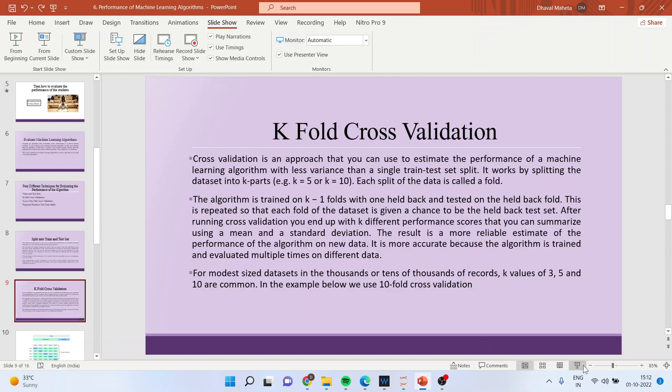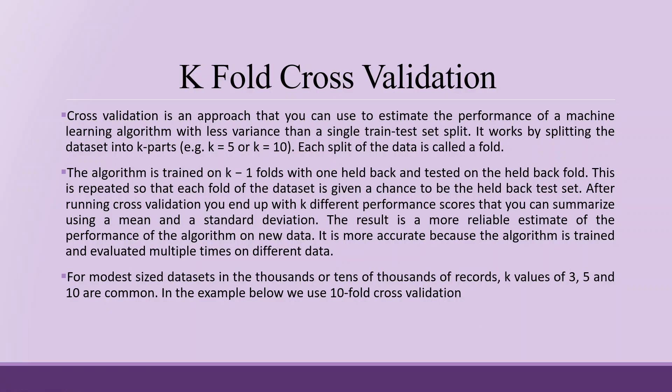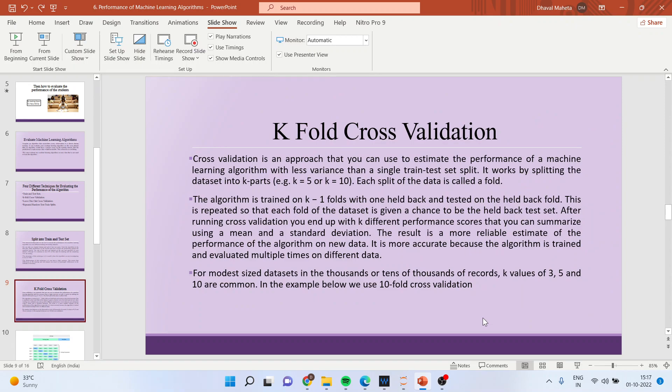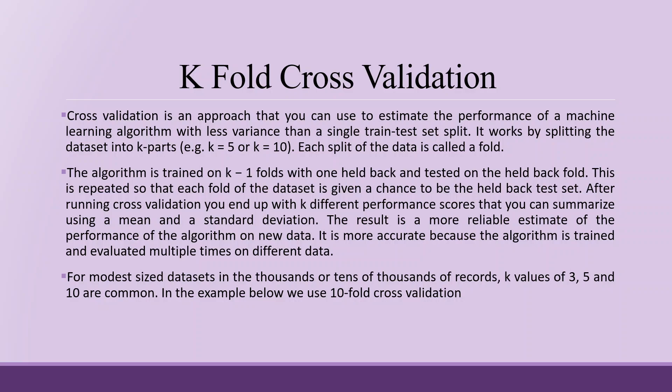Now let's see the second method: K-fold cross validation. Cross validation is an approach to estimate algorithm performance with less variance than a single train-test split. It works by splitting the dataset into K parts — each split is called a fold. The algorithm is trained on K-1 folds with one held back, and tested on the held-back fold.